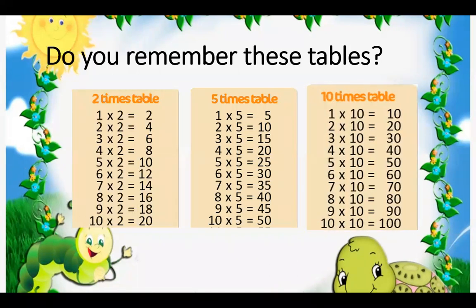10 times table: 1 times 10 is 10, 2 times 10 is 20, 3 times 10 is 30, 4 times 10 is 40, 5 times 10 is 50, 6 times 10 is 60, 7 times 10 is 70, 8 times 10 is 80, 9 times 10 is 90, and 10 times 10 is 100.